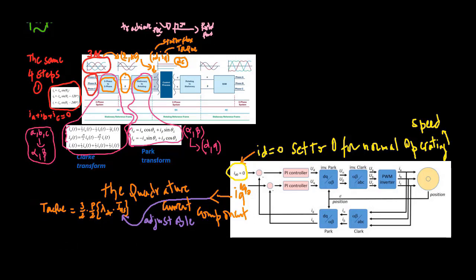The quadrature or Q axis is where all the action takes place. Because this axis is quadrature to the rotor flux axis at all times, any stator current component that lies on this axis is directly responsible for producing motor torque. For example, if you are designing an electric vehicle using FOC, when you push down harder on the accelerator pedal you are commanding more positive Q axis current. Conversely, when you push down harder on the brake pedal, you are commanding more negative Q axis current.